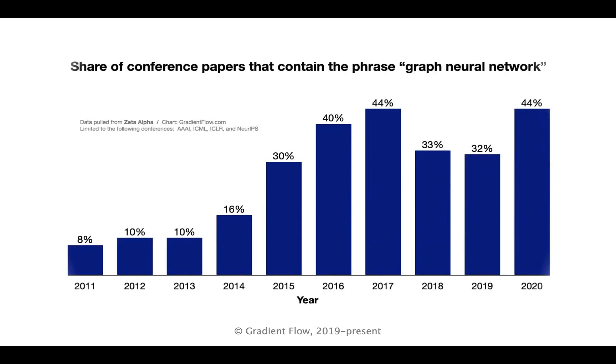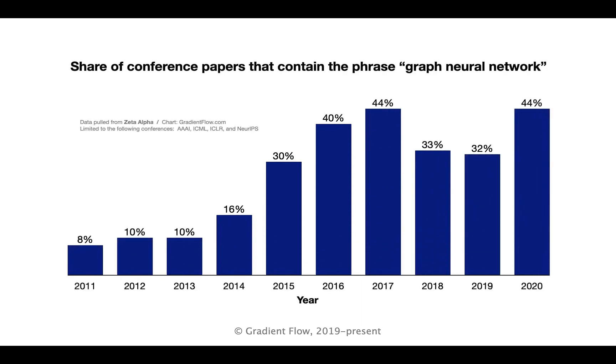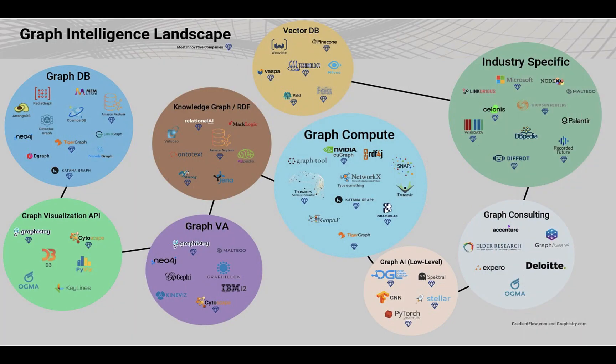Companies are reporting graph AI to be a measurably superior AI technique for their use cases. Graphs can provide better answers to behavioral questions and provide the basis for smarter fraud detection and recommendation systems.